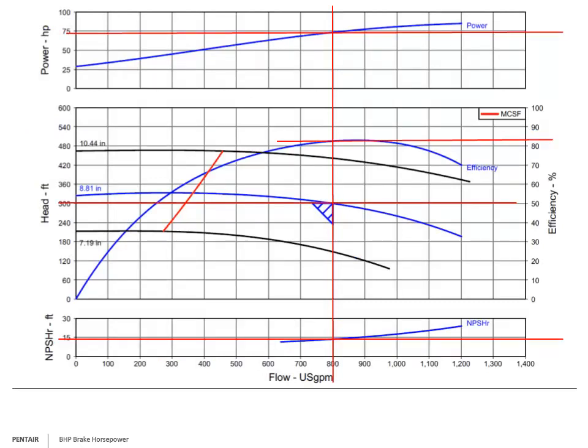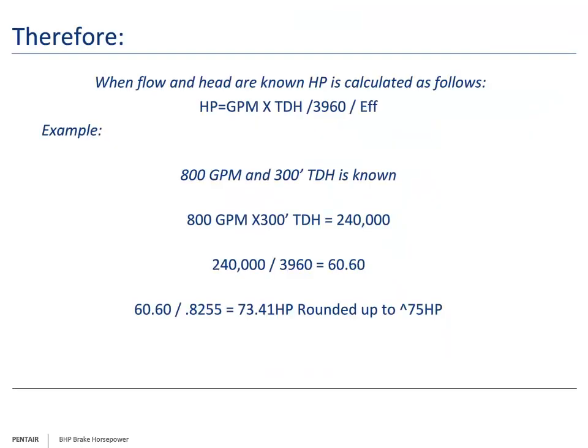Doing the math, we calculate that the system will need 74.81 horsepower, rounded up to 75 horsepower. Now let's prove the results. Going to the sizing program and inputting the gallons per minute and total dynamic head, we see we are in fact pretty spot on. Digging into the output a little deeper, we find the efficiency is in fact 82.55%. Going back to the formula now using 82.55%, we see the horsepower needed is 73.41 horsepower, which still rounds up to a 75 horsepower motor.